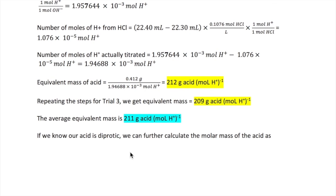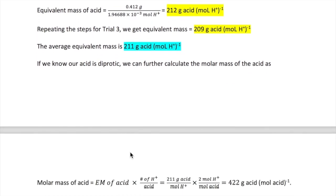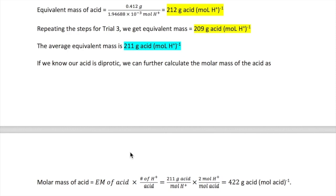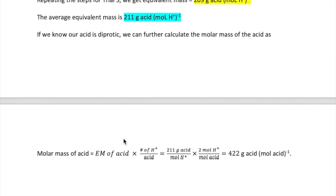Now, this is where you will stop in your lab report, but let's say I tell you that your acid is diprotic. Now, you can actually go ahead and calculate the actual molar mass of the acid. Remember, to do that, you just need to take the equivalent mass of the acid, multiply by the number of protons that the acid produces. So, in this case, 211 grams of acid per mole of H+, is the average equivalent mass, and then you multiply that by 2 moles of H+ per mole of acid, since it's diprotic acid, giving you 422 grams of acid per mole of acid now.